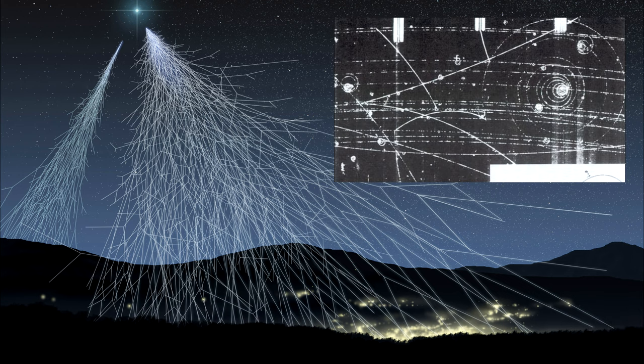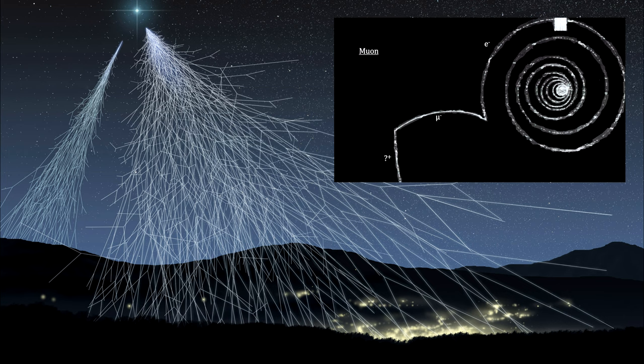You'll recall from our segment on elementary particles in the How Small Is It video book, that we discovered muons with cloud chambers on mountaintops and in high-flying balloons. We found that their half-life is only 2.2 microseconds.